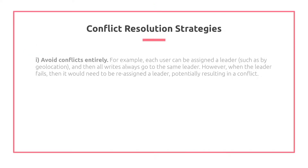What are some resolution strategies for conflicts? First is avoiding conflicts entirely. For example, each user can be assigned a leader such as by geolocation, and then all writes always go to the same leader. However, in our example with Canada and Romania, if the Canada data center goes down, we'll need to failover to the Romania data center, and during that process conflicts may arise again — so this doesn't entirely fix it.